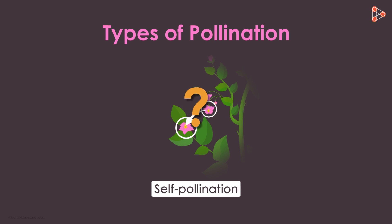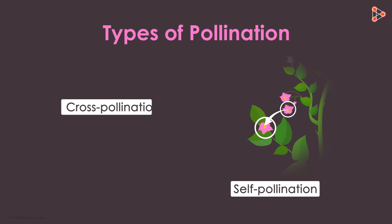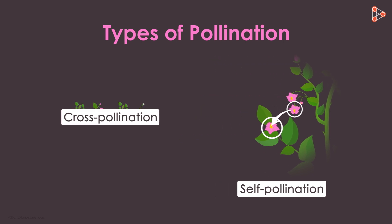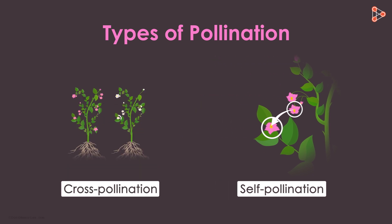So what will the next type be? The other type of pollination is called cross-pollination, where the pollens travel from the anther to the stigma of a different flower on another plant.